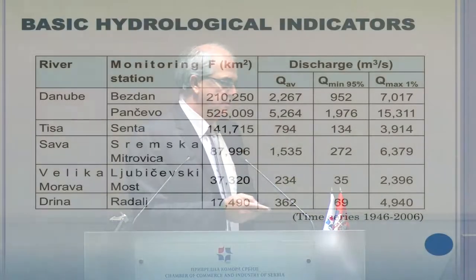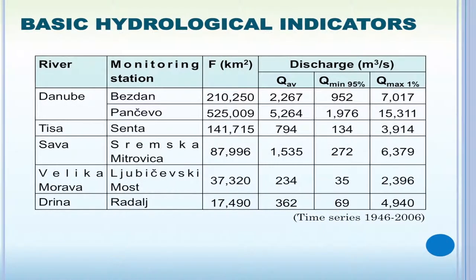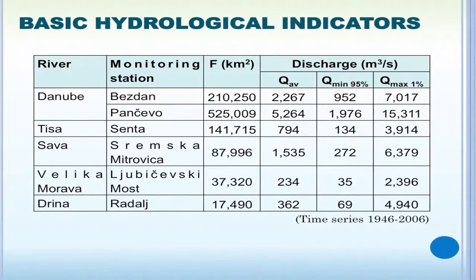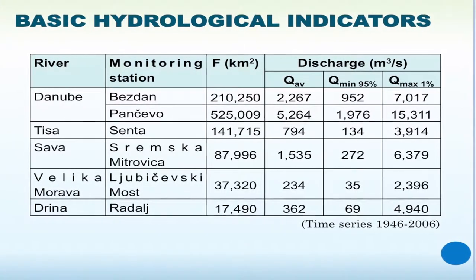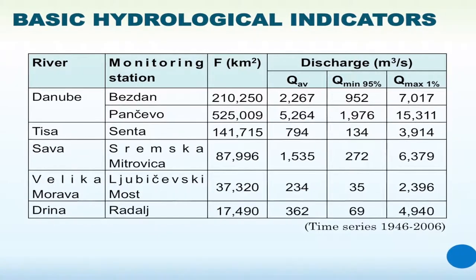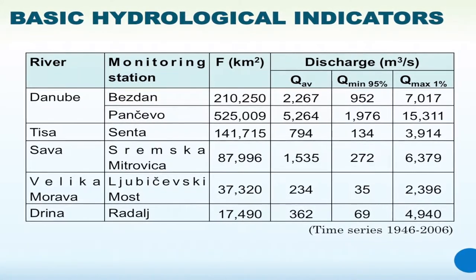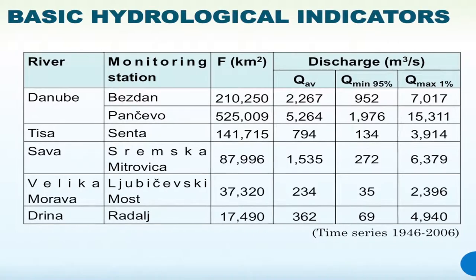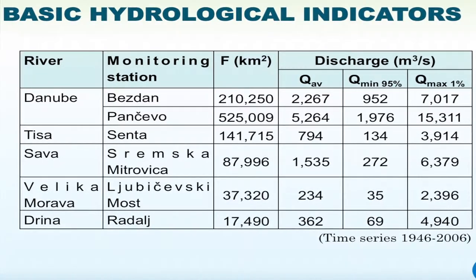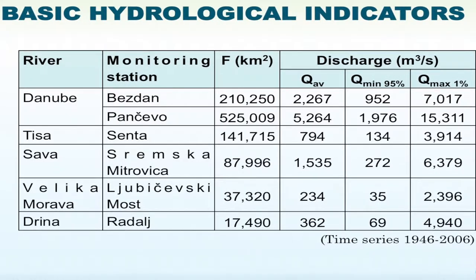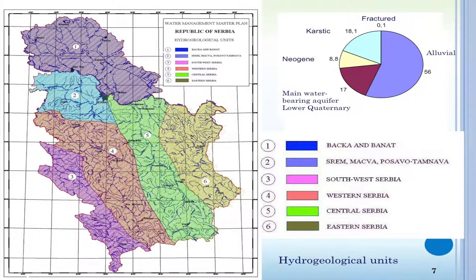Basic hydrological indicators show that the Danube is one of the biggest rivers in Europe and the world, with very good conditions regarding low and average water flows. Low water of the Danube is nearly 2,000 cubic meters on average in Serbia, creating good conditions for water management and irrigation. However, the biggest national river, Velika Morava, with about 40,000 square kilometers of catchment area, has a relatively low average flow of about 230 cubic meters and very low water of just 35 cubic meters, creating serious problems for water quality.